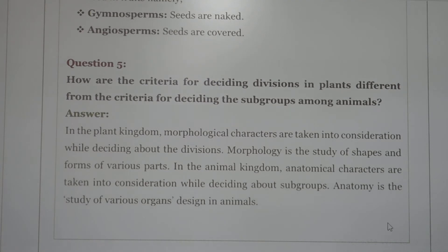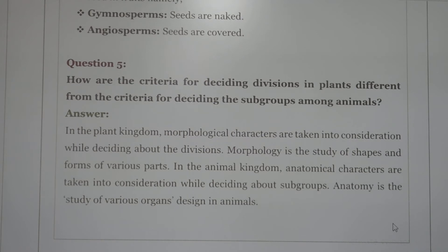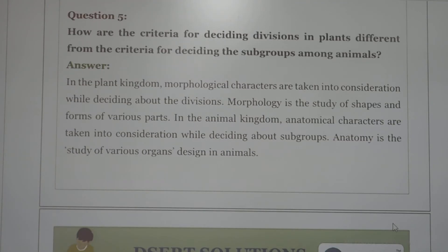Next question: how are the criteria for deciding divisions among plants different from the criteria for deciding subgroups among animals? In the plant kingdom, morphological characters are taken into consideration when deciding about the divisions. Morphology is the study of shape and forms of various parts. In the animal kingdom, anatomical characters are taken into consideration when deciding about the subgroups. Anatomy is the study of various organs and their arrangement.